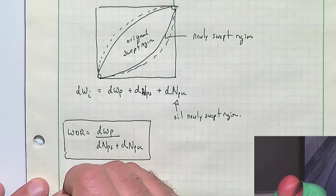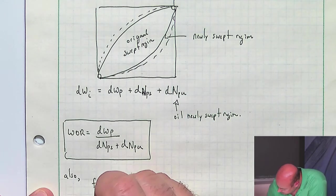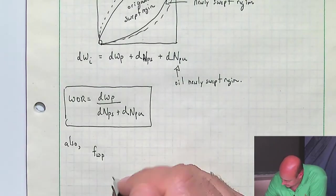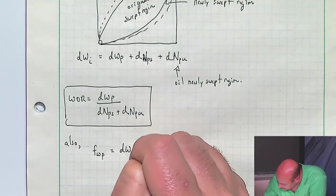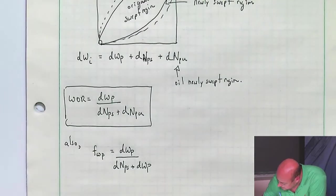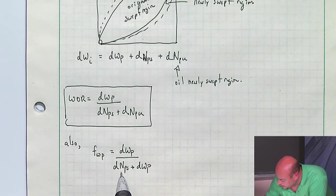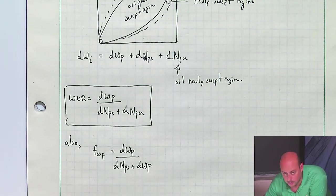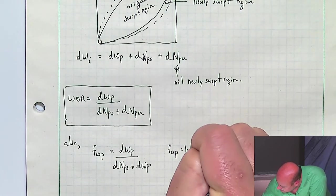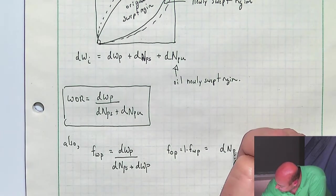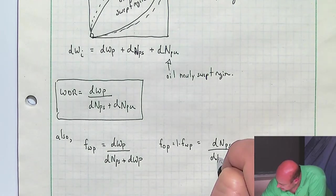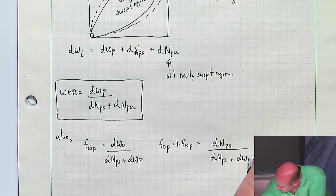The fractional flow of water at the producer well along one of the existing streamlines is DWP divided by DNPS plus DWP — that is, water produced divided by water produced plus oil produced in the originally swept region. Likewise, FOP, which is one minus FWP, can be written as DNPS divided by DNPS plus DWP. They have the same denominator.